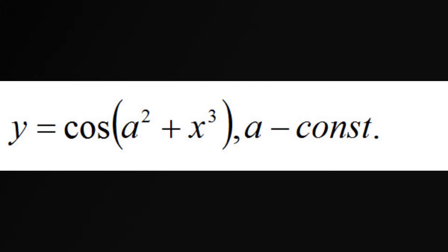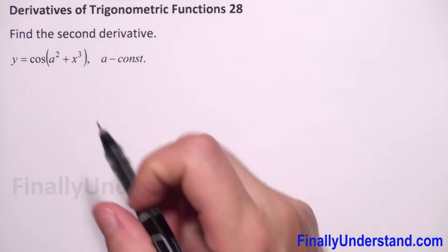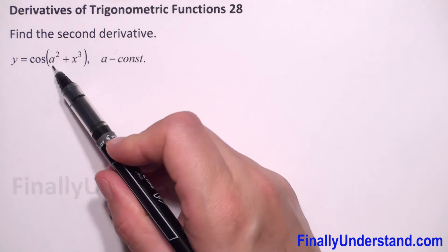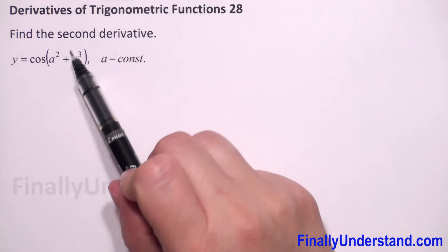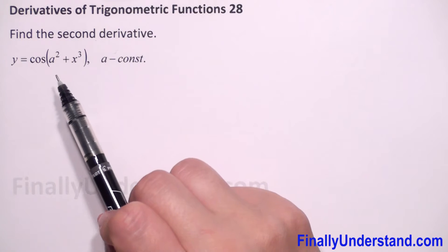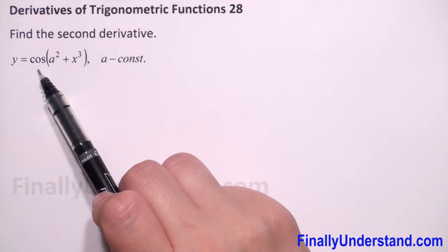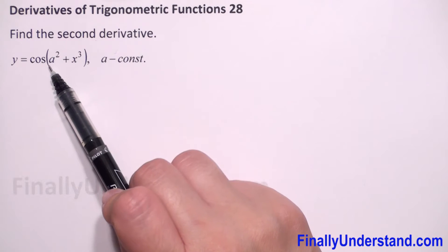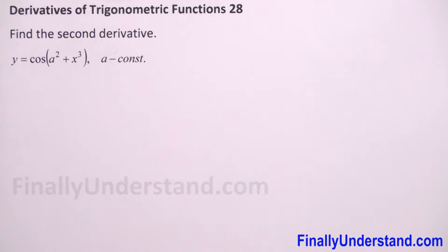We have to find the second derivative, so first we have to find the first derivative of our function. The variable is x and a is a constant. We have a composite function here, so first we have to find the derivative of cosine, and next we have to find the derivative of the expression which is in parenthesis.